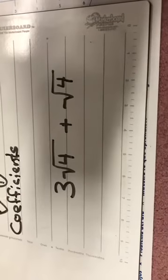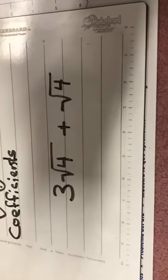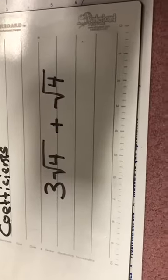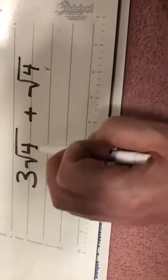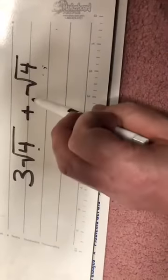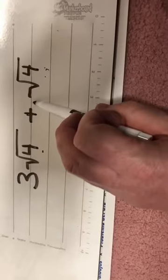The rule here is the same as it would be if I was working with variables. I can add these because the radicands are the same. The radicand is four. The coefficients are different. There's no coefficient here.